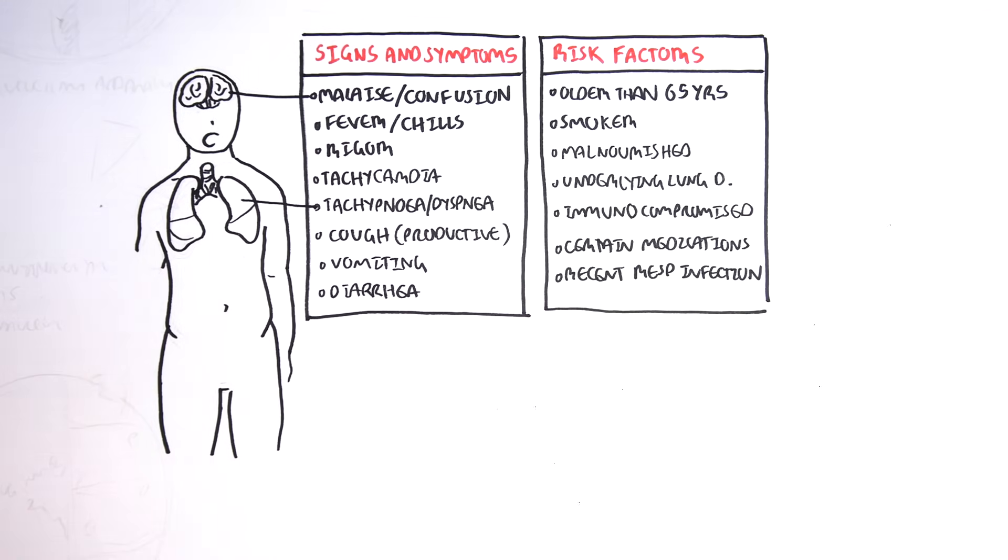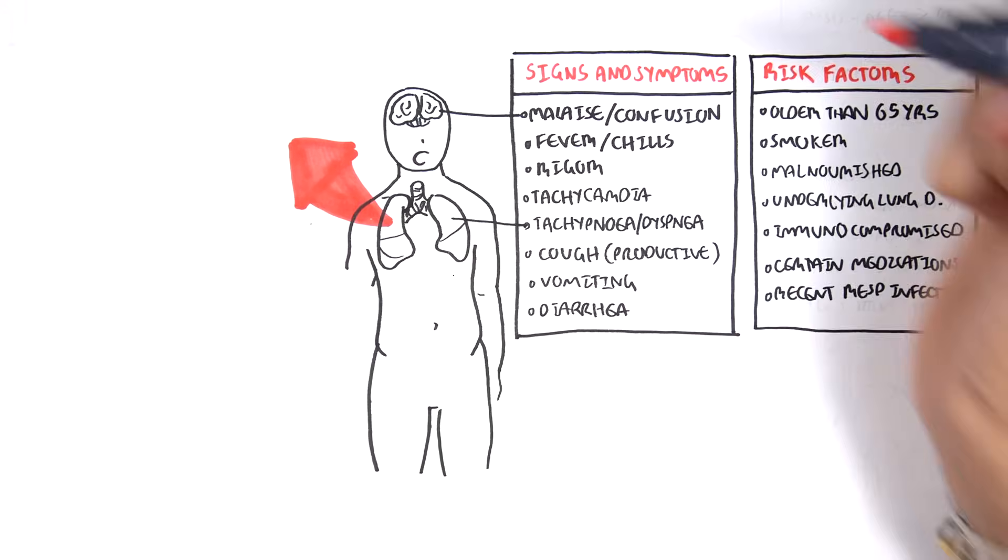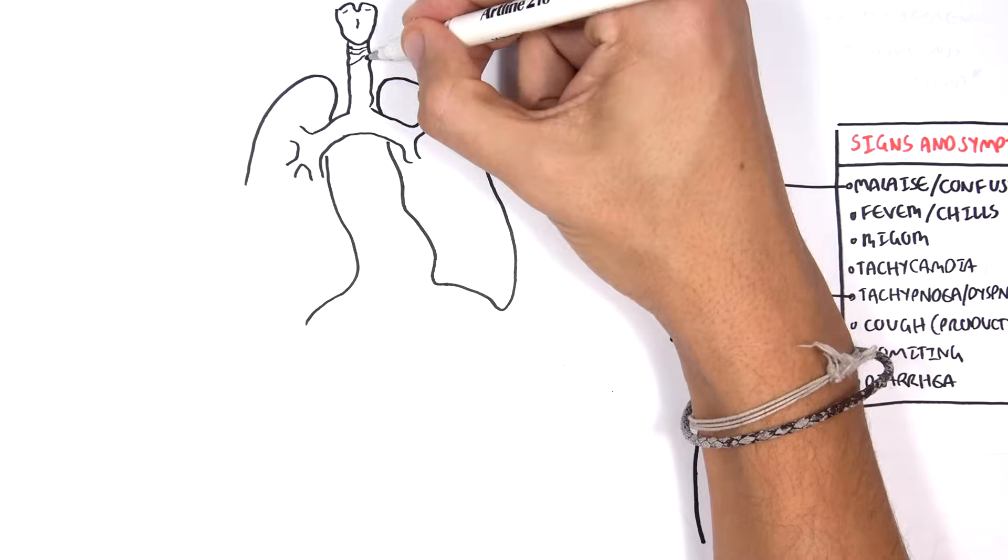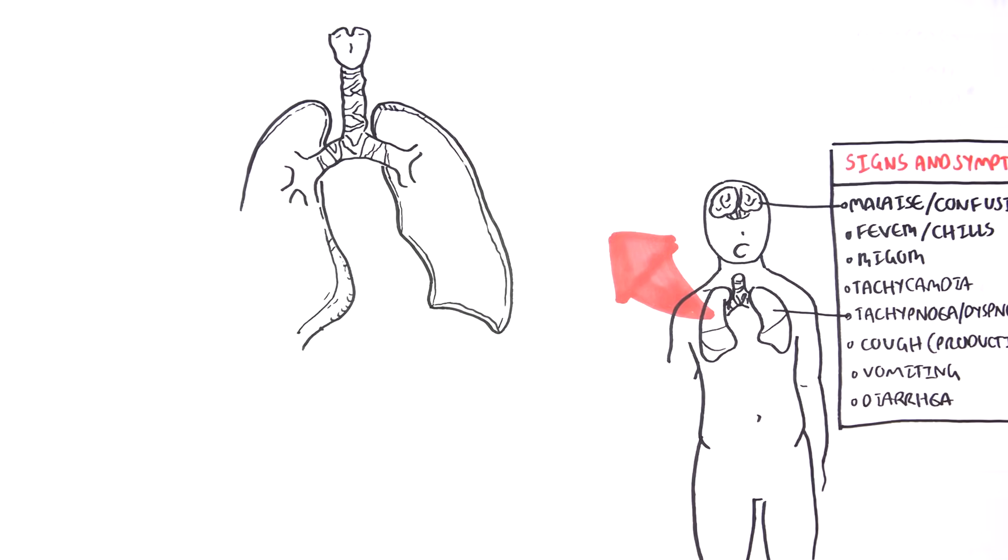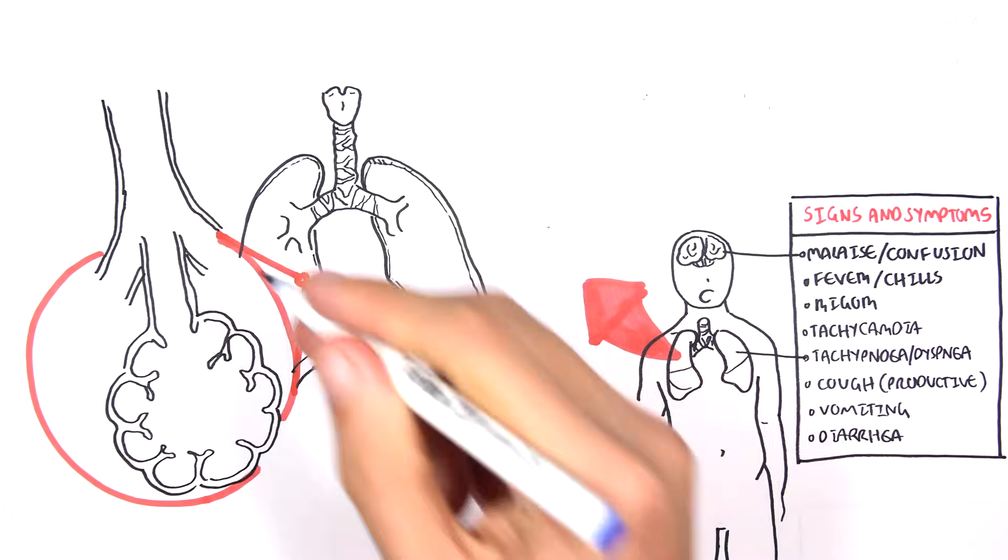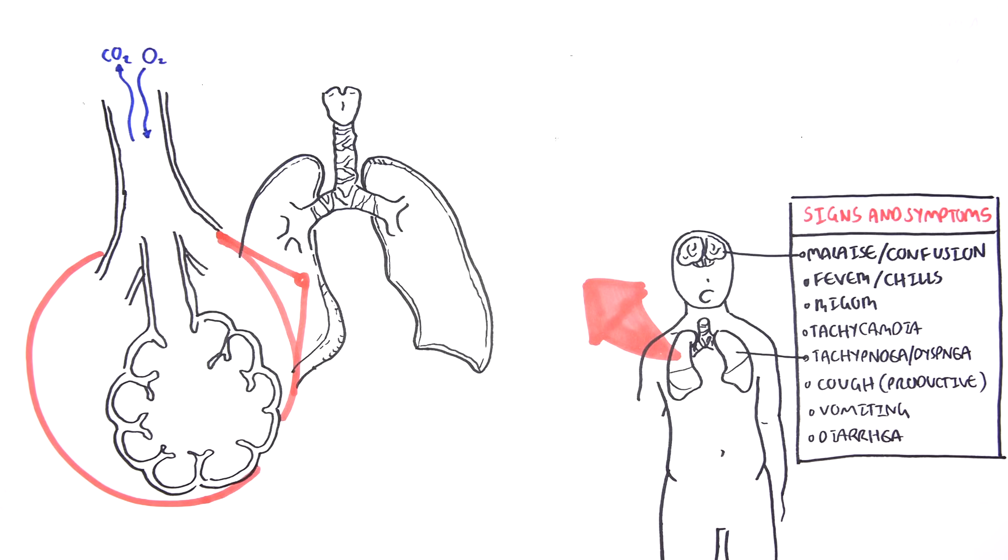Before looking at the pathophysiology of pneumonia, let us first look at the function of the lungs and the normal defense mechanisms within the lungs. So here is the lung, and the most distal end that makes up the lungs are the alveoli. Here we are cutting a section of the alveolus with its terminal bronchiole. Oxygen is moving in and carbon dioxide is exhaled out.